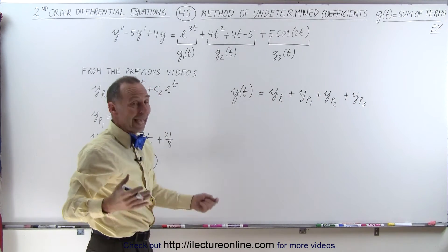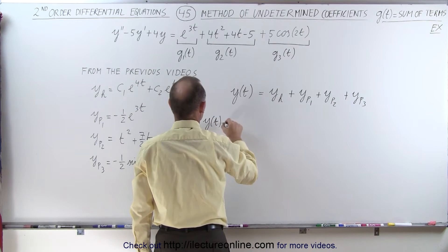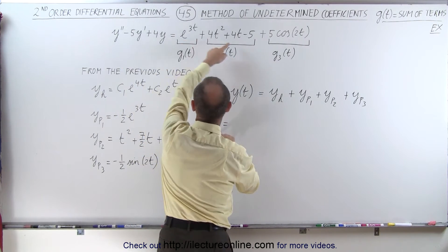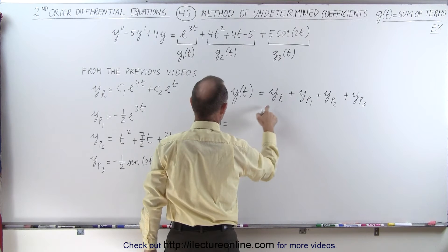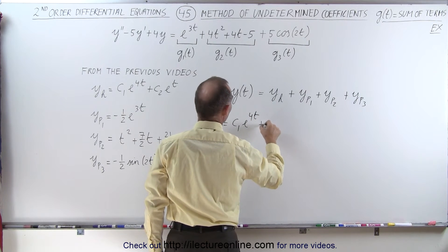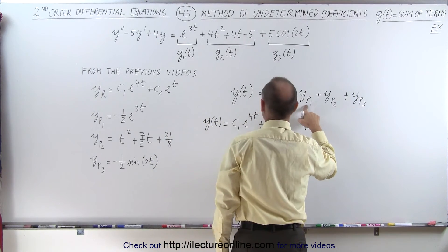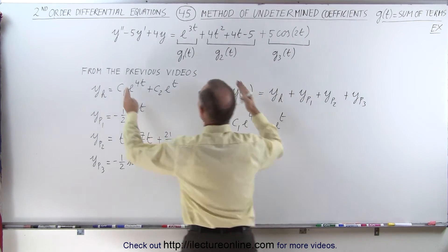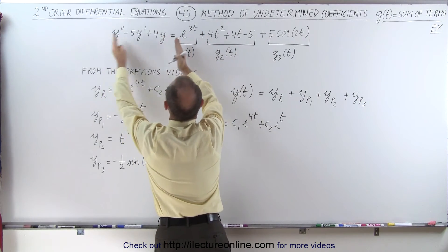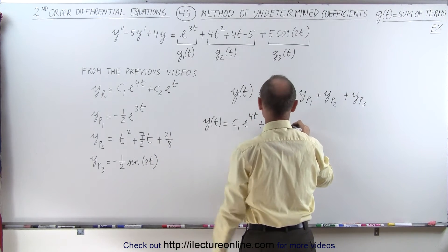So then all we have to do is simply add everything together, and we can then say that the solution to the original differential equation here is equal to the homogeneous part C1 e to the 4t plus C2 e to the t plus the particular solution of the equation. When we take this equation and set it equal to this alone and we get minus